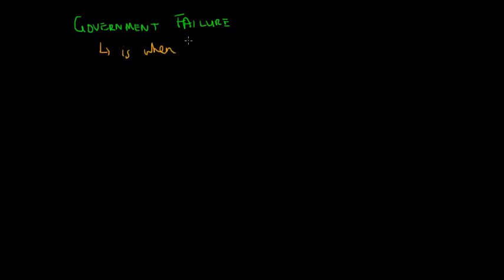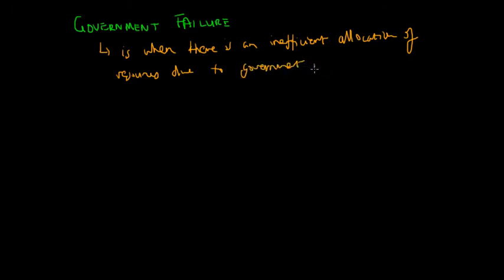So the definition of government failure is when there is an inefficient allocation of resources due to government intervention. Now there are many different reasons as to why the government intervenes, but we'll talk about that in a moment.